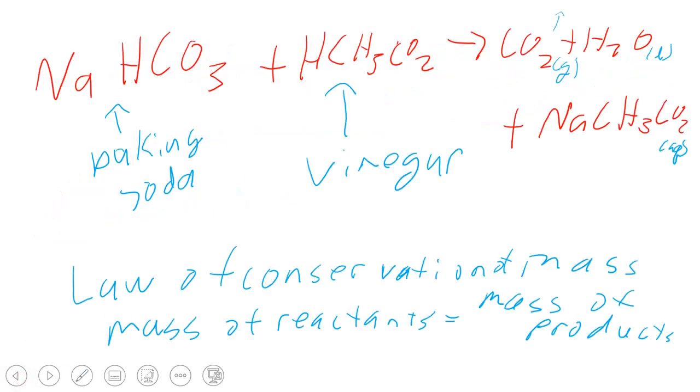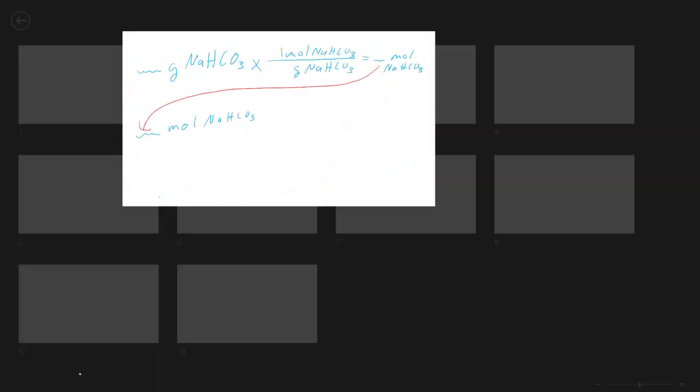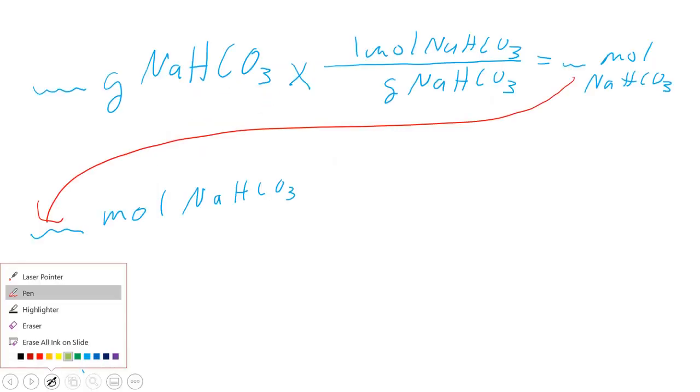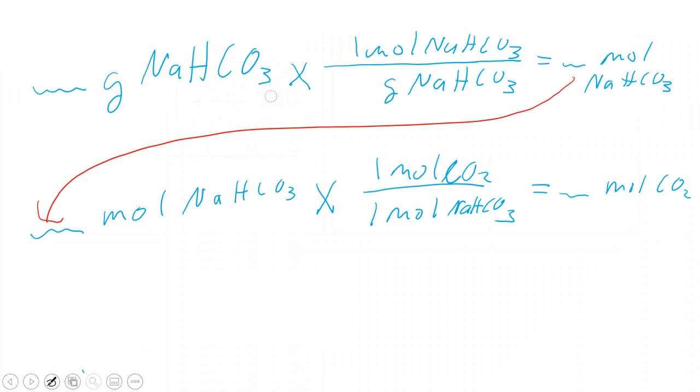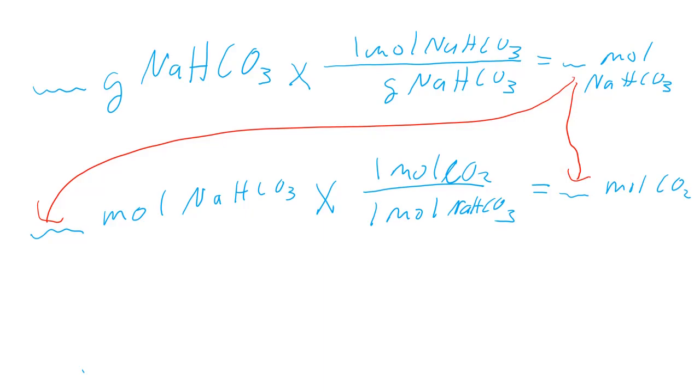if we look at our reaction, for every one mole of sodium bicarbonate, we produce one mole of carbon dioxide. Since this is a one-to-one ratio, it's kind of nice because it makes our life easier. The number of moles of sodium bicarbonate is also going to be our moles of carbon dioxide.